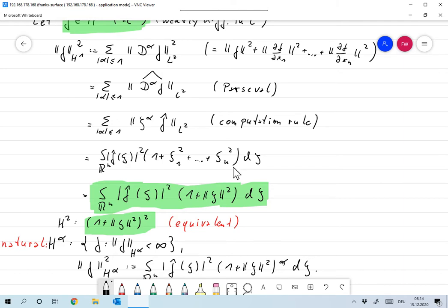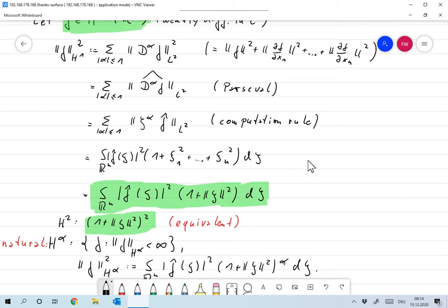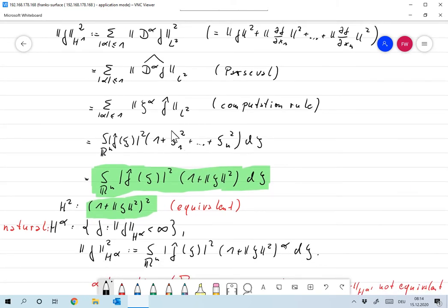This is nothing but the integral over R^n absolute value of f head of psi squared times 1 plus psi_1 squared and so on plus psi_n squared d xi. And this guy over here I write as norm of psi squared. So this is nothing but the integral over R^n f head of psi times 1 plus norm psi squared d xi. So it's the L^2 norm of this one here.